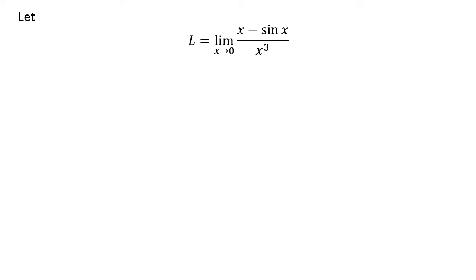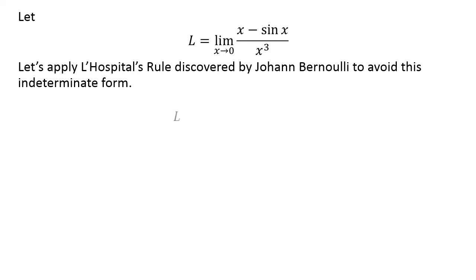Let L equal the limit of x minus sin x upon x cubed as x approaches 0. Let us apply L'Hospital's Rule discovered by Johann Bernoulli to avoid this indeterminate form. L equals the limit as x approaches 0 of the derivative of x minus sin x over the derivative of x cubed, which gives us 1 minus cos x over 3x squared.